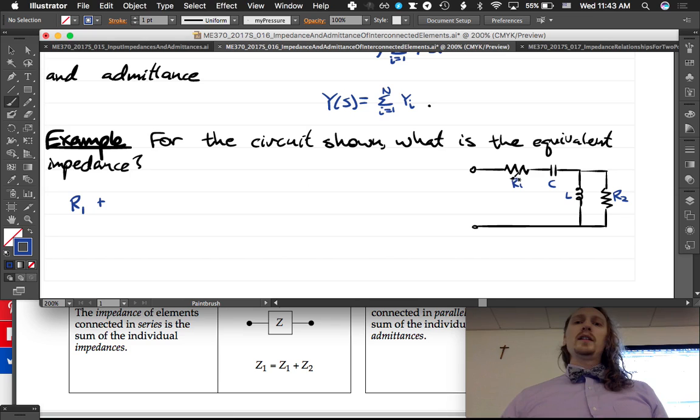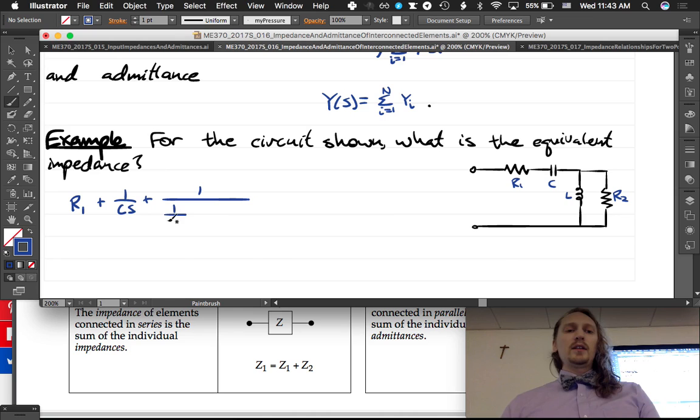R1 is the impedance of this plus the impedance of C, which is what? 1 over CS plus - so I'm just going to do a big fraction - it's 1 over, 1 over LS plus 1 over R2.